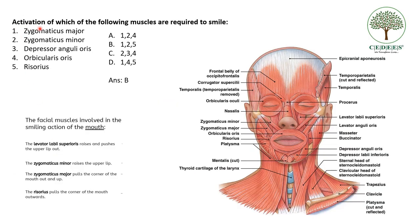Next question: activation of which muscles is required to smile? Zygomaticus major, zygomaticus minor, depressor anguli oris, orbicularis oris, or risorius? The answer is zygomaticus major, zygomaticus minor, and risorius. The facial muscles involved in smiling are: levator labii superioris, which raises and pushes the upper lip out; zygomaticus minor, which raises the upper lip; zygomaticus major, which pulls the corner of the mouth out and up; and risorius, which pulls the corner of the mouth outward.